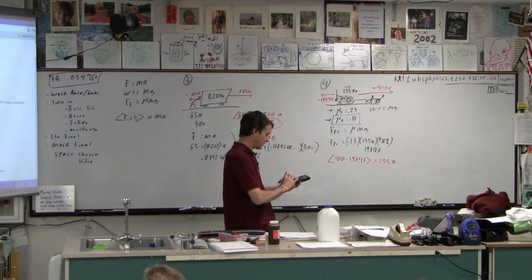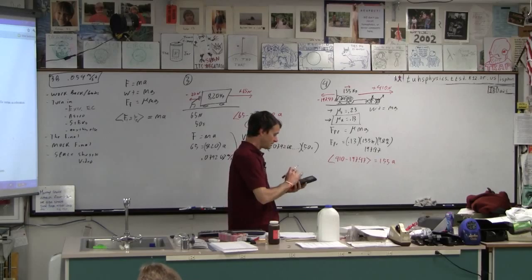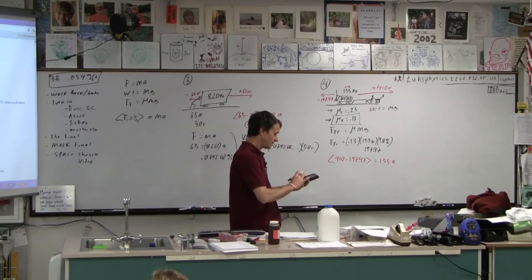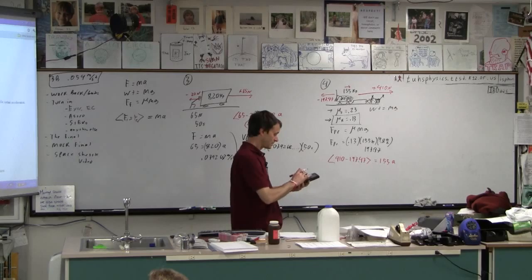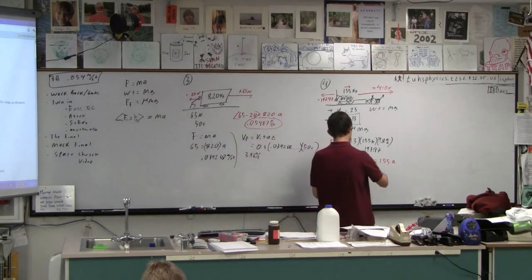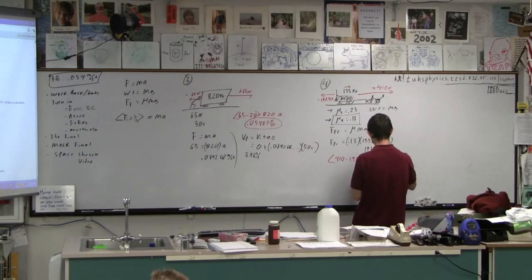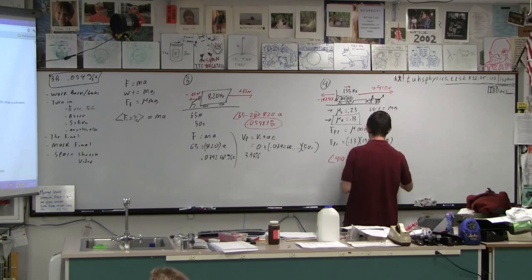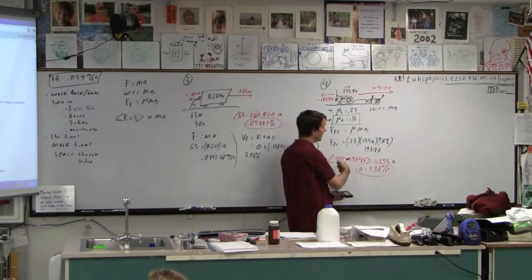So 410. Wait, I'm going to store that number because I'm way too lazy. I'm way too lazy to write that number down. Okay, so 410 minus the force divided by 155. 1.37. So don't forget, don't forget, though, when you're doing that.